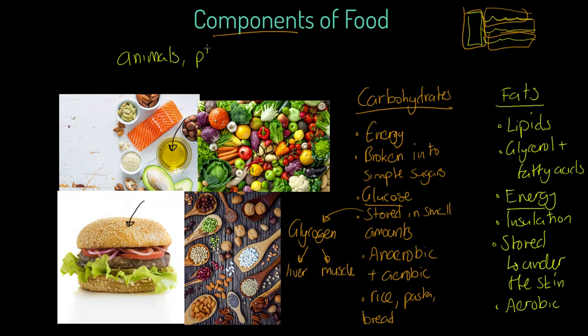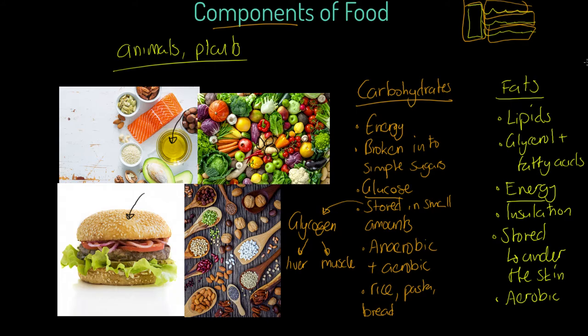Where do we get fats from? We get them from animals and from plants. Plants store oils — photosynthesis produces glucose which has to be stored in different formats. We should also be aware that there are healthier and less healthy examples of fats.